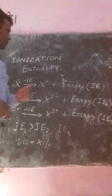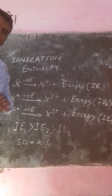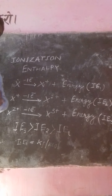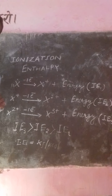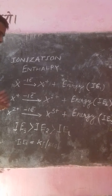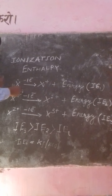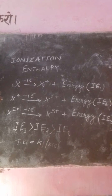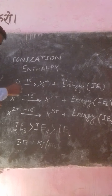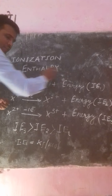Hello students, today we will discuss about ionization energy. In the previous class, I have already explained you all about ionization energy. Ionization energy is the amount of energy required to release an electron from an isolated gaseous atom.